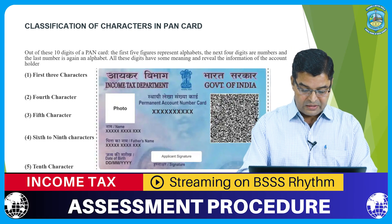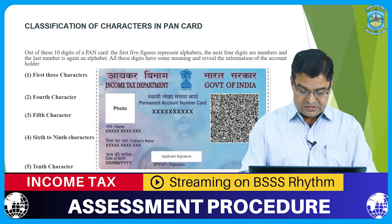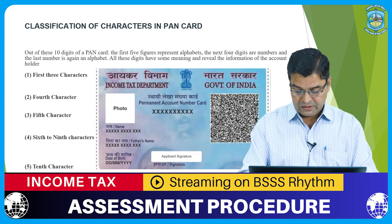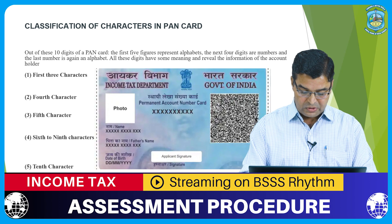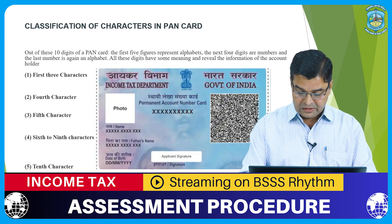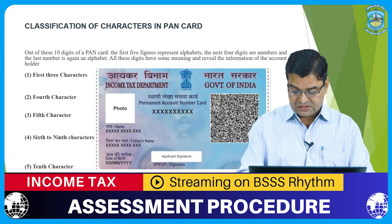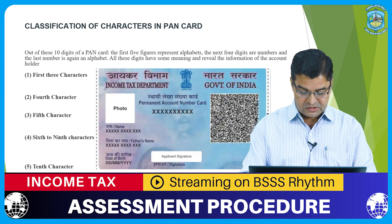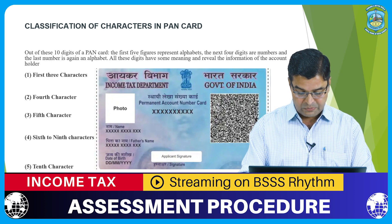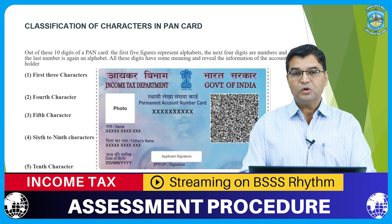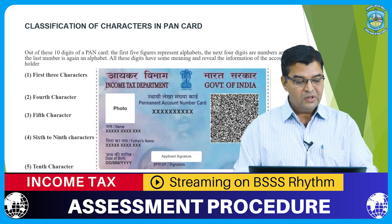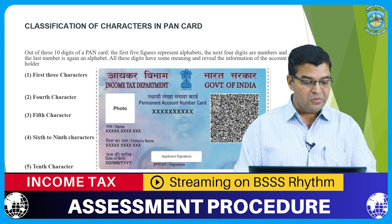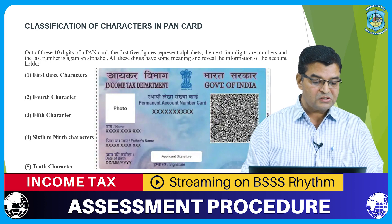Second: the fourth character. The fourth character represents the status of the PAN card holder. It is one of the most important characters, and those who deal with PAN cards usually look at this character to identify the status of that particular person. The fourth character for a majority of PAN holders is the letter P, which stands for person.